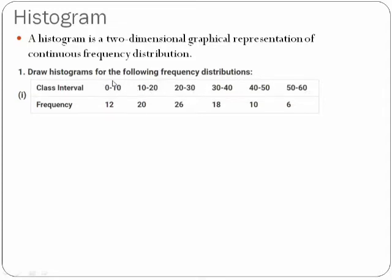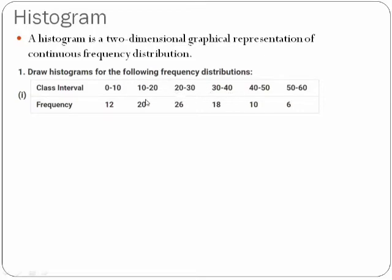In a class interval, the first number is known as the lower limit and the second is called the upper limit. If the upper limit coincides with the lower limit of the next class interval — for example, 10 coincides with 10, 20 with 20, 30 with 30, 40 with 40, and 50 with 50 — then such a frequency distribution is known as continuous frequency distribution, and there is no problem with this data.